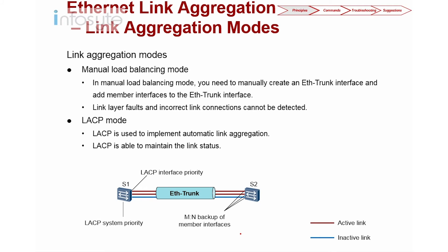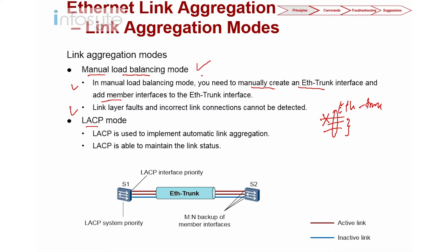Next, let's look into the link aggregation modes. In EtherTrunk we have two modes: one is called manual load balancing, and another is called LACP. Manual load balancing has no negotiation protocol running. In manual mode, you need to manually create an EtherTrunk interface and add the member interfaces. If you have three interfaces configured in EtherTrunk, all three will be active. If one fails, then two will remain active — there is no negotiation taking place in manual load balancing mode.